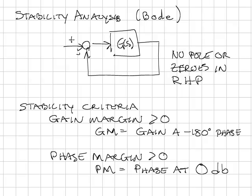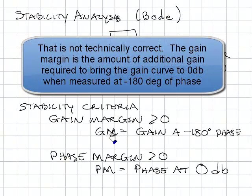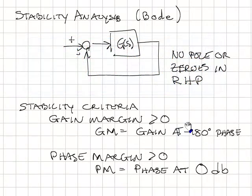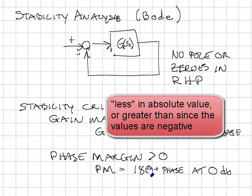There are two stability criteria: gain margin and phase margin. In order for a system to be stable, the gain margin must be greater than zero. The gain margin is the gain of the system at 180 degrees of phase. And the phase margin must be greater than zero, where the phase margin is 180 degrees plus the current phase at zero dB. Essentially, that's the amount of phase that you have less than minus 180 degrees.